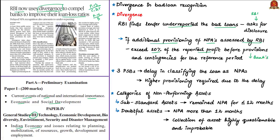The RBI, as bank regulator, asks the lender to make disclosures if the additional provisioning for NPAs assessed by RBI exceeds 10% of the reported profit of the bank before it makes provisions and contingencies for the reference period. The news article mentions that divergence takes place when under-reporting is more than 10% of bad loans or provisioning. Three public sector banks — Union Bank of India, Indian Bank and Central Bank of India — have reported divergence, as they delayed the process of recognizing bad loans and classifying them as non-performing assets. RBI has considered this delayed recognition and classification as amounting to under-reporting.